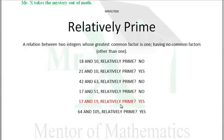17 and 19, are they relatively prime? Oh my goodness, yes, because they are both prime in and of themselves. So if you have two prime numbers, they will definitely be relatively prime. Two prime numbers will always be relatively prime.